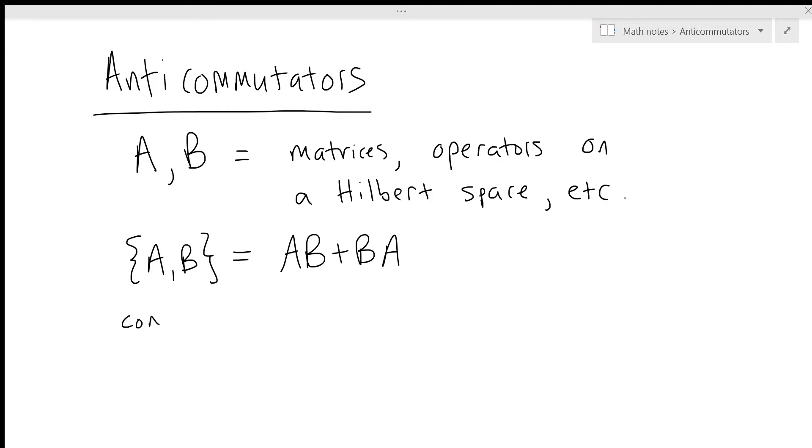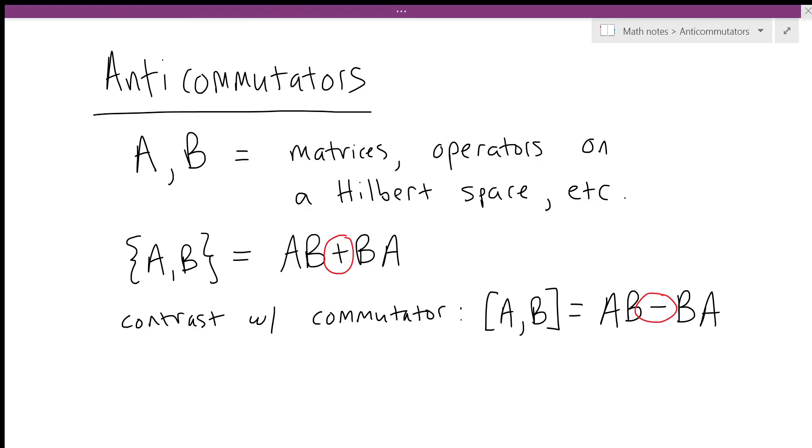We should contrast this with the definition of the commutator. The commutator of two operators, A and B, is written using square bracket notation [A,B], and equals A times B minus B times A. The main difference between commutators and anticommutators is the sign: we use a plus sign for anticommutators and a minus sign for commutators.